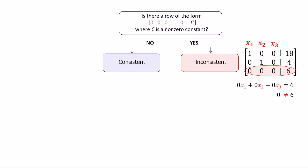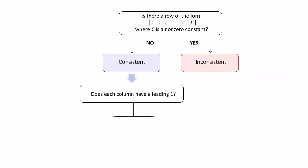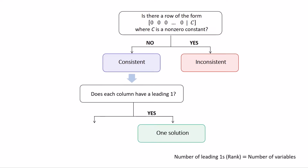As for consistent systems, we can also identify the type of solution from the number of leading ones, which is referred to as the rank, in the reduced row echelon form matrix. If each column of the reduced row echelon form of the augmented matrix has a leading one, the system has a unique solution. In other words, if the number of leading ones is equal to the number of variables in the system, then the system has only one solution.